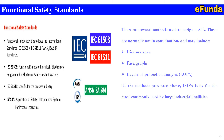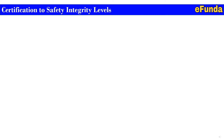Several methods are used to assign a SIL. These are normally used in combination and may include risk matrices, risk graph, and Layer of Protection Analysis, that is LOPA. Of these methods, LOPA is by far the most commonly used at large industrial facilities. Understanding functional safety standards is very important when implementing a SIL system or safety-complied system for plant operation and certification.